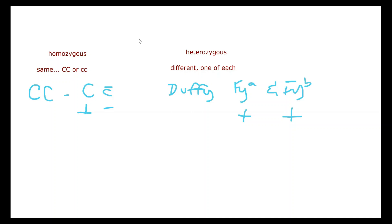If you were homozygous for Duffy — let's say Duffy A — on a panel that would be positive for Duffy A and negative for Duffy B. And if you were homozygous for Duffy B, it would be positive for Duffy B and negative for Duffy A.